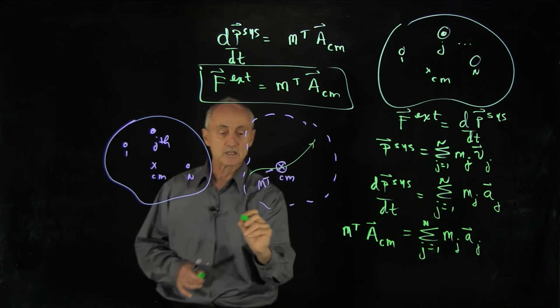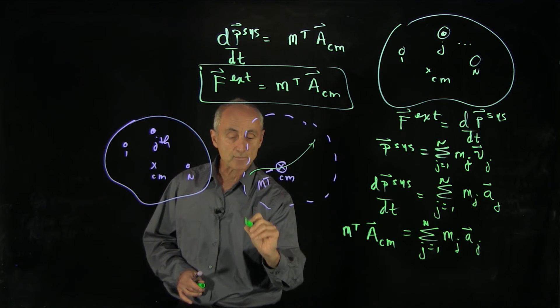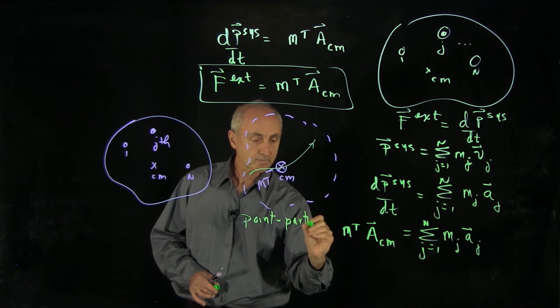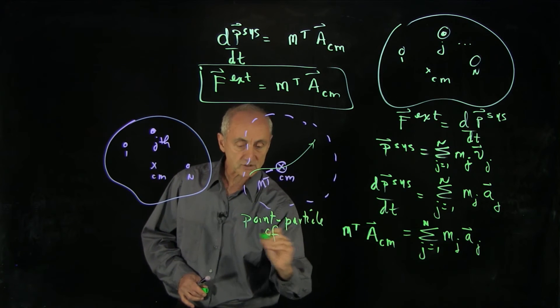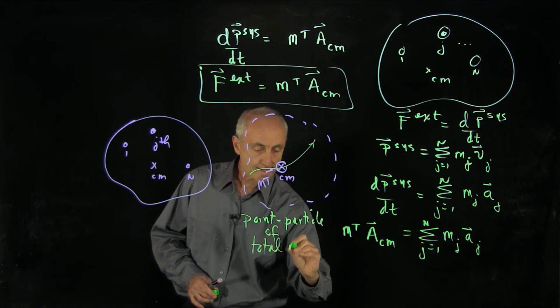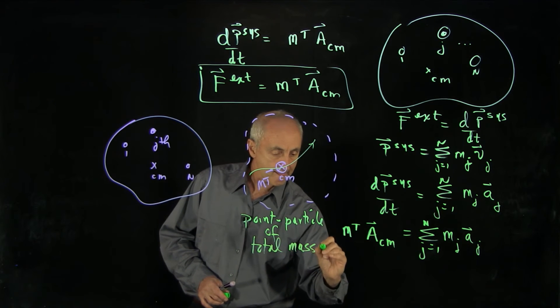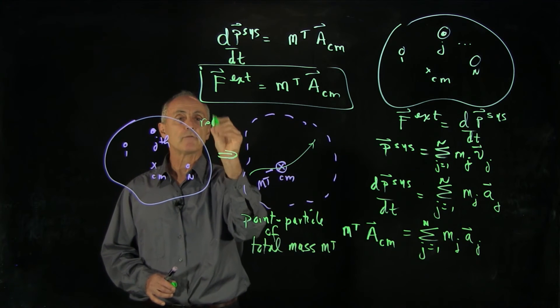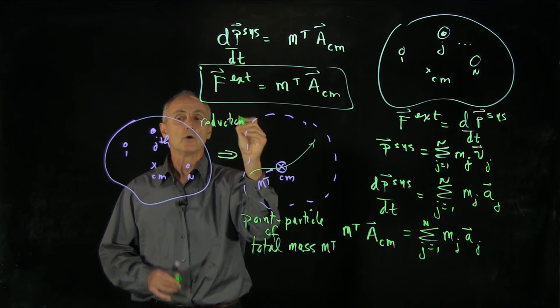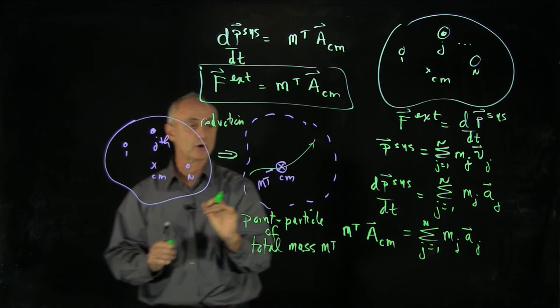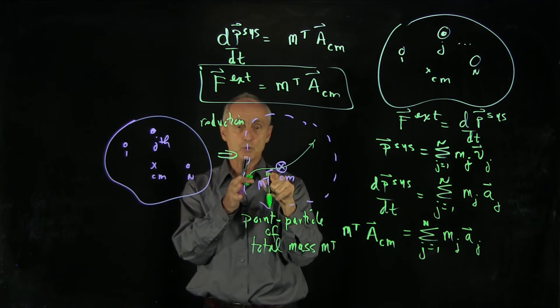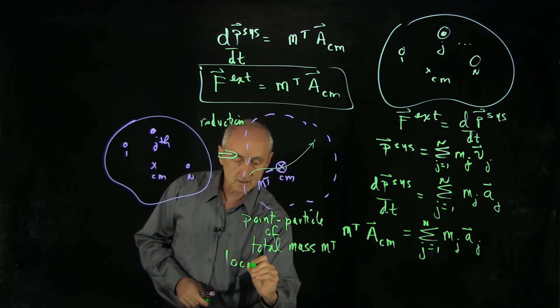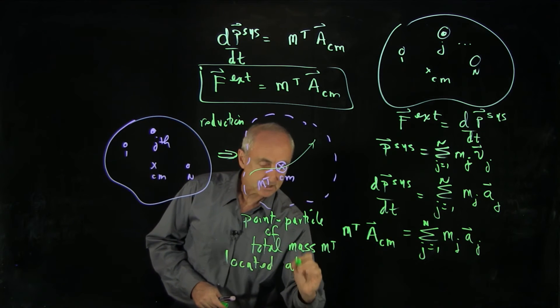And all we have to think about is this is now a simple point particle of total mass, m total. So what we've done is we've done a very important reduction. We've taken a complicated system of particles and reduced it to a single point particle of total mass, m, located at cm.